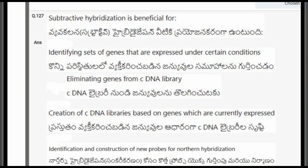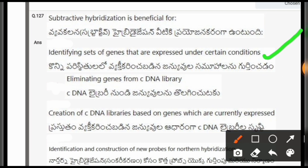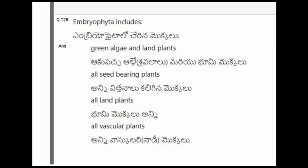Next question: Subtractive hybridization is beneficial for? The options are: identifying sets of genes that are expressed under certain conditions; eliminating genes from cDNA library; creation of cDNA libraries based on genes currently expressed; identification and construction of new probes for northern hybridization. The correct option is the first one, identifying sets of genes that are expressed under certain conditions.